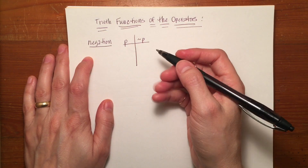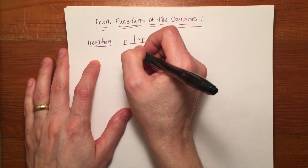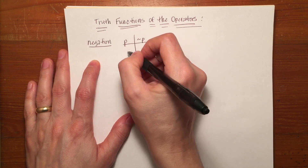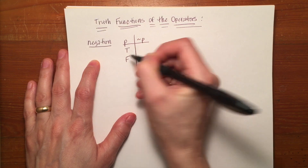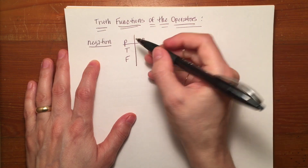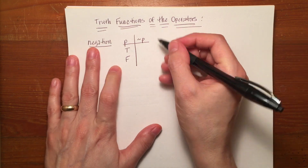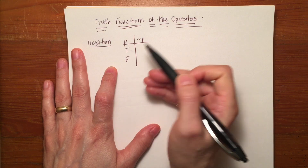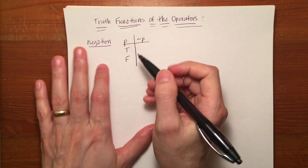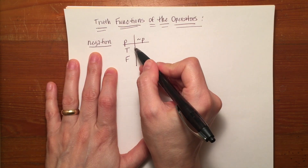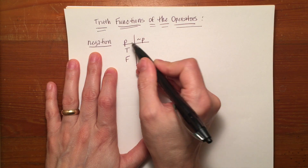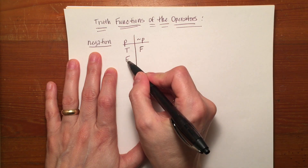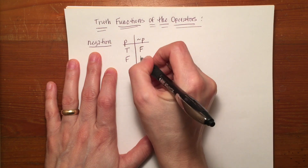If I want to know all the potential truth values of not p, I have to start off with what all the potential values of p would be — true and false, there are only two. Because the tilde negates things, what it does truth-value-wise in our truth tables is it makes whatever p is the opposite. So if p is true, then not p will be false; if p is false, then not p will be true.